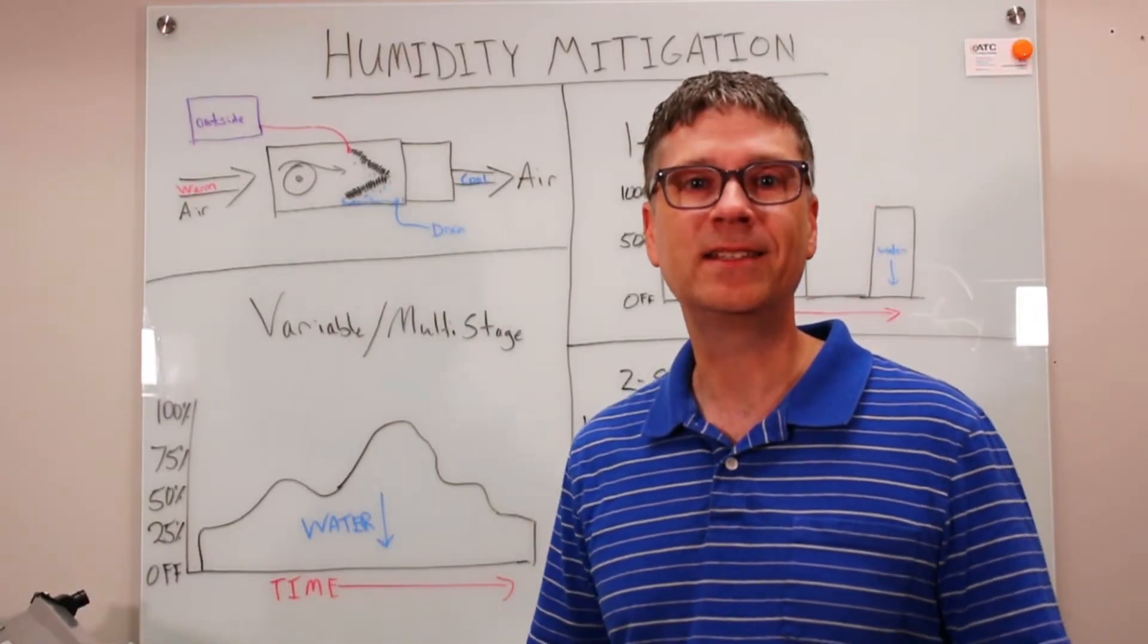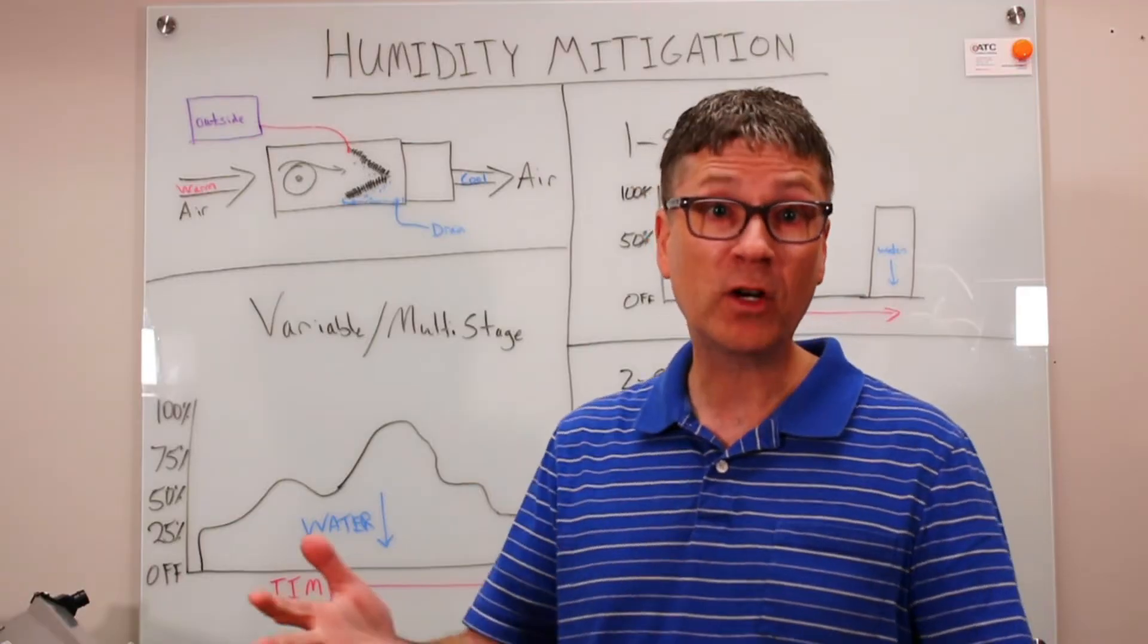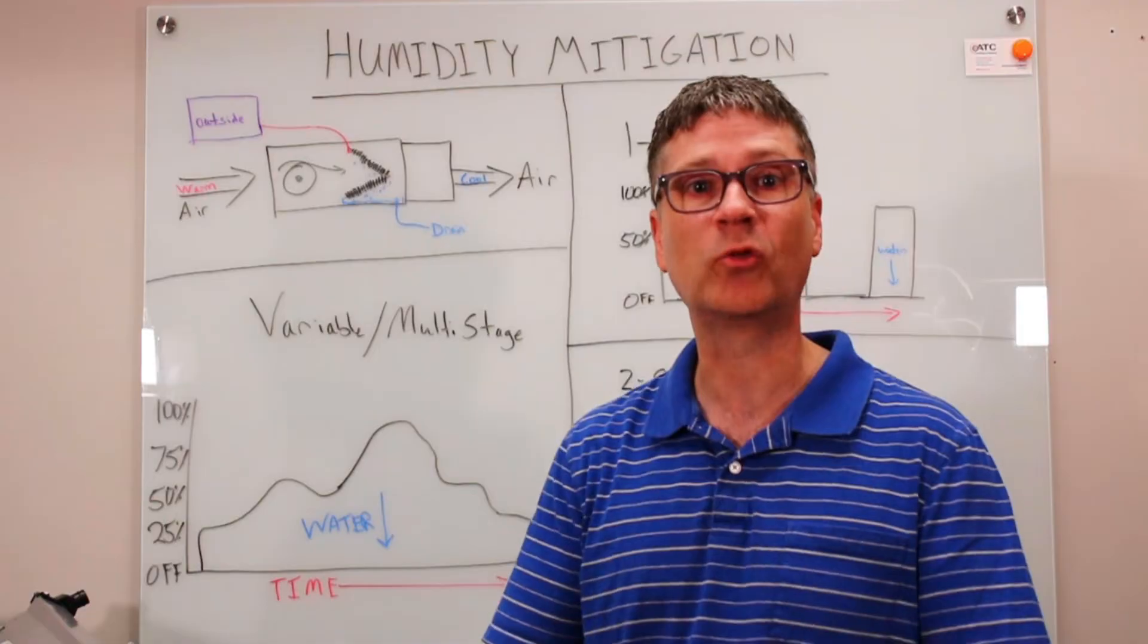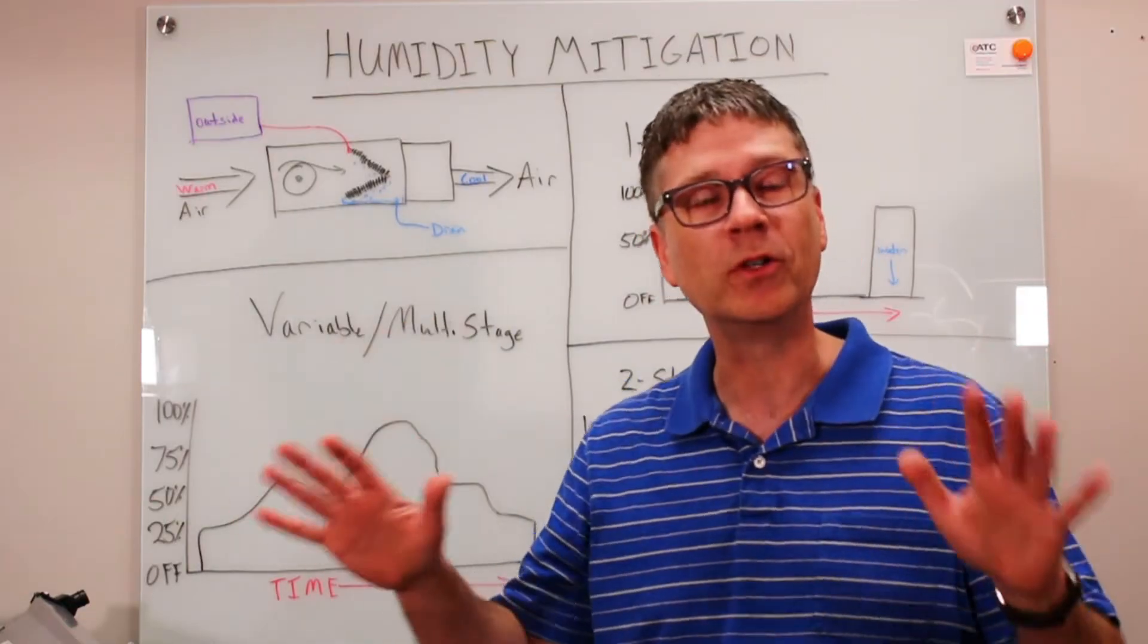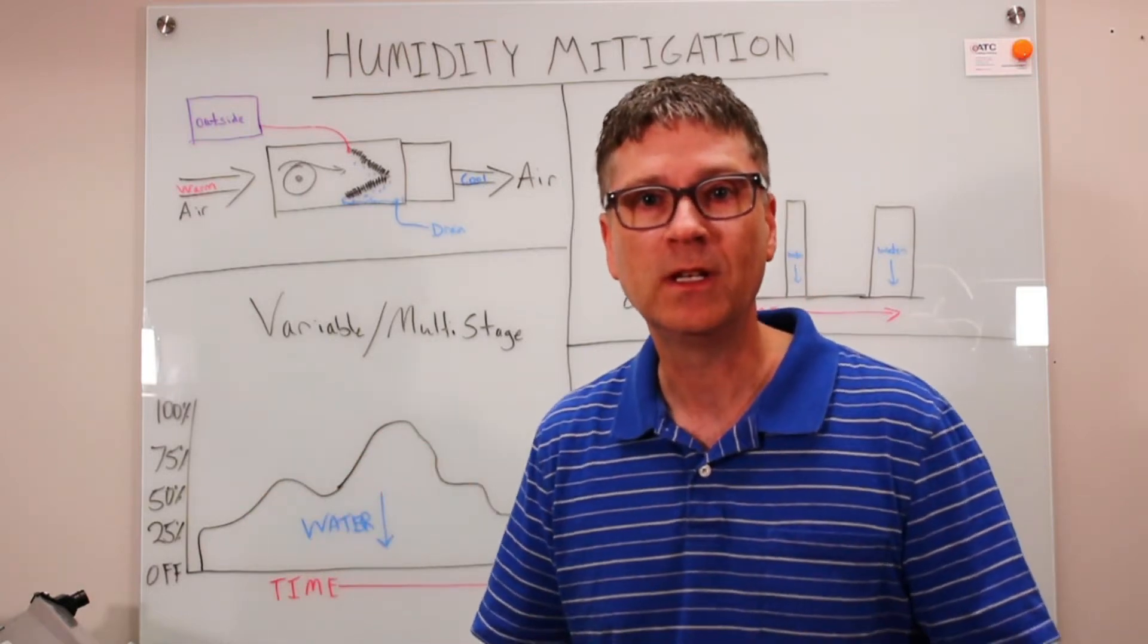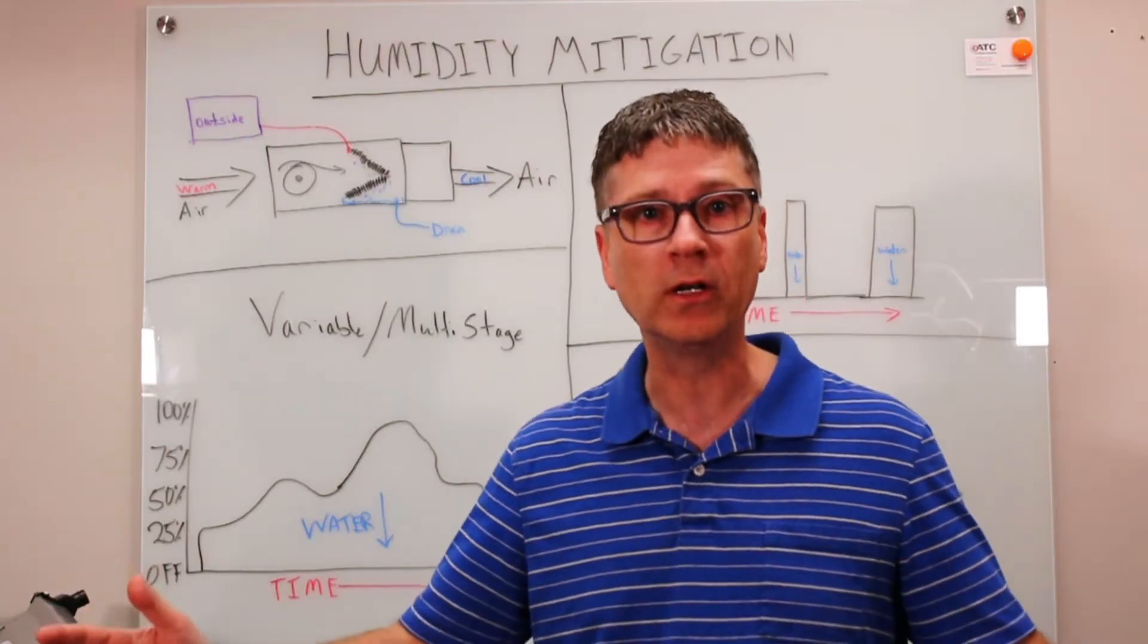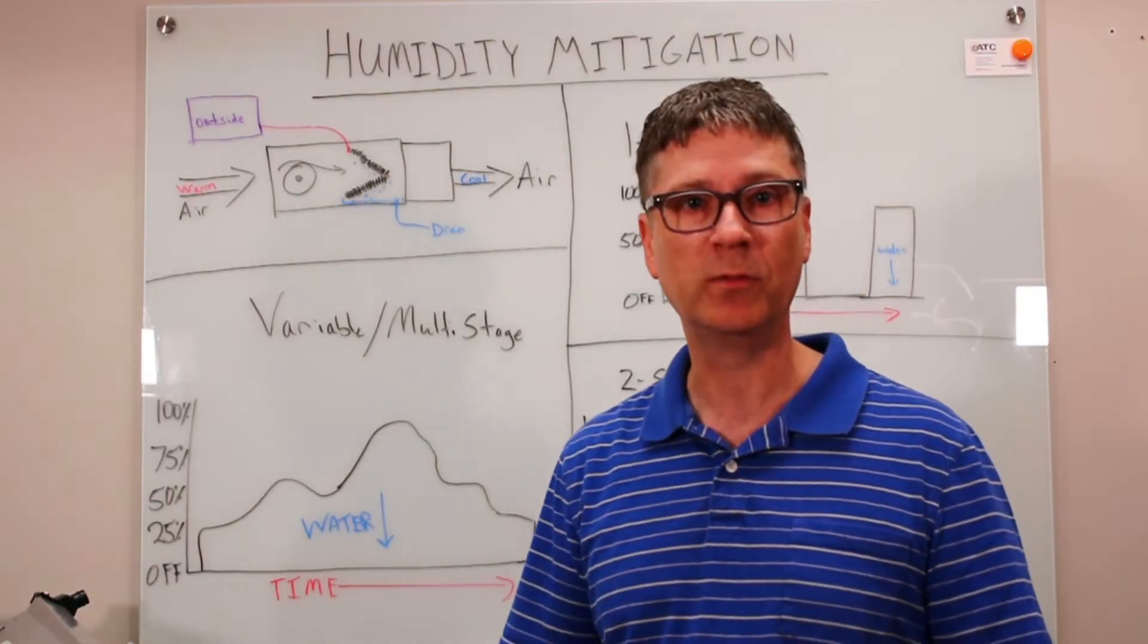So what AC system is best at humidity mitigation? First, the best system at getting to humidity is one that is correctly sized or even slightly undersized. Sounds maybe counterintuitive, doesn't it? Why? Well, a smaller system is good for humidity removal precisely because it must run longer to satisfy the temperature setting. And the longer it runs the more humidity is removed.